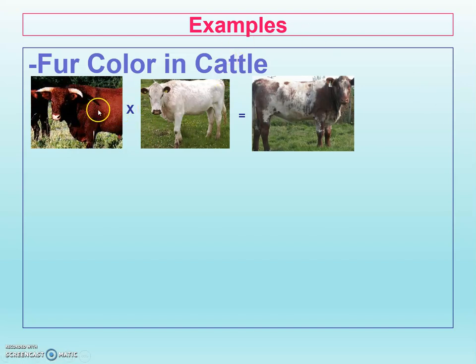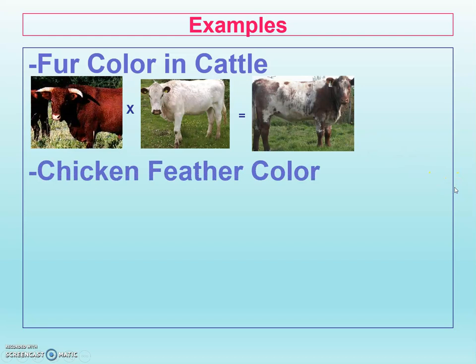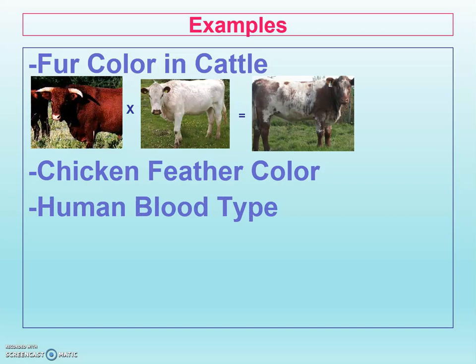We have red hair with white hair. It doesn't make pink, but it makes roan. So you have an equal number of red and white hairs — if you want to sit down and start counting them to make sure they're equal, you could do it. We're going to play around with chicken feather color here in just a bit. And then human blood type — we're going to come back to that because it's a little bit more complicated. There are a lot of different inheritance patterns incorporated in human blood type.